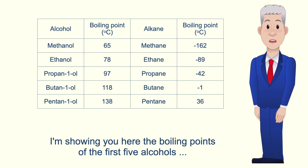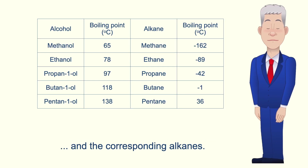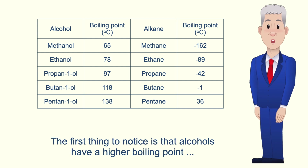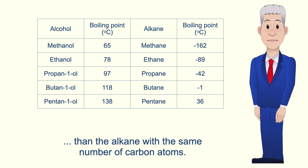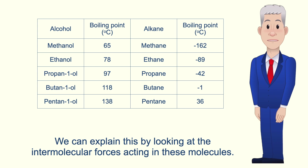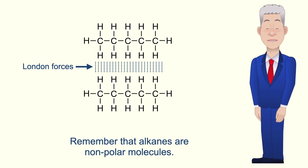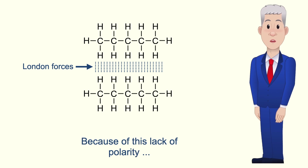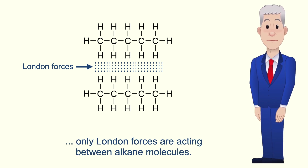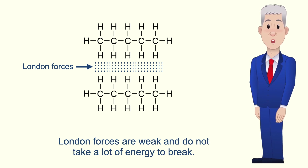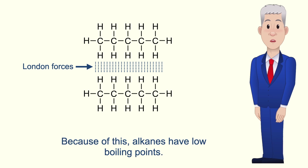I'm showing you here the boiling point of the first five alcohols and the corresponding alkanes. The first thing to notice is that alcohols have a higher boiling point than the alkane with the same number of carbon atoms. We can explain this by looking at the intermolecular forces acting on these molecules. Remember that alkanes are non-polar molecules, so only London forces are acting between alkane molecules. London forces are weak and do not take a lot of energy to break, so alkanes have low boiling points.